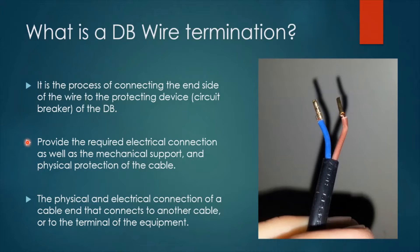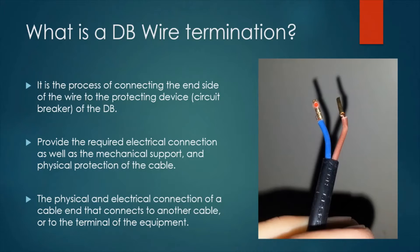Termination is also to provide the required electrical connection as well as the mechanical support and physical protection of the cable — the physical and electrical connection of a cable end that connects to another cable or to the terminal of the equipment. We can conclude that termination means connecting the inside of the wire to the circuit breaker inside a distribution board, or it could also refer to an electrical connection between two wires or by connecting the inside to the load like appliances or other devices.